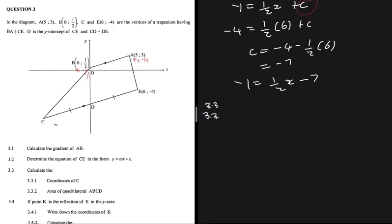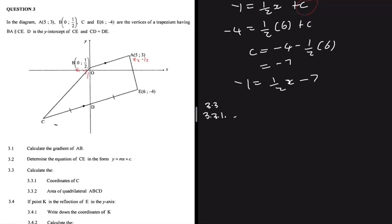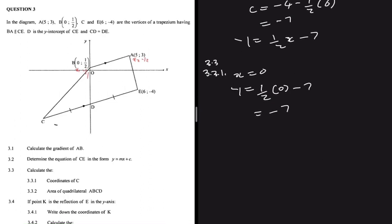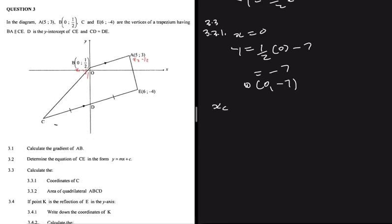Question 3.3.1 asks us to calculate the coordinates of C. Since the length from D to E equals the length from D to C, D is the midpoint of CE. For point D, x = 0, and substituting into the equation of CE: y = ½(0) - 7 = -7. So D is at (0, -7).